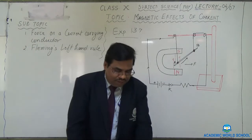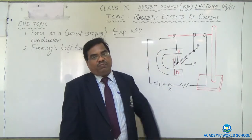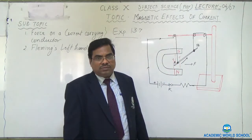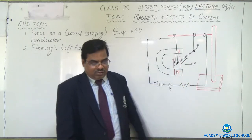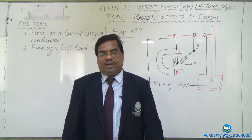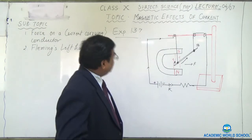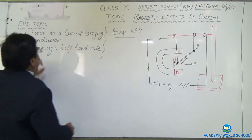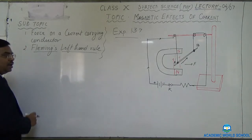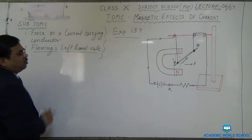We have seen that whenever a current carrying conductor is kept in a uniform magnetic field, it feels one force. What is the direction of the force? The question arises: is there a simple way by which we can find out the direction of the force? Yes. The simplest way is Fleming's left hand rule. Earlier we learned about the right hand thumb rule — now this is another rule: Fleming's left hand rule.